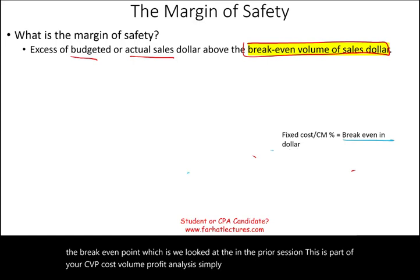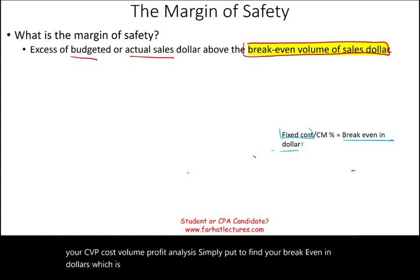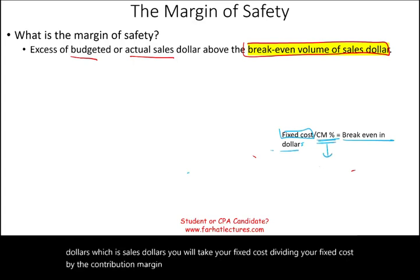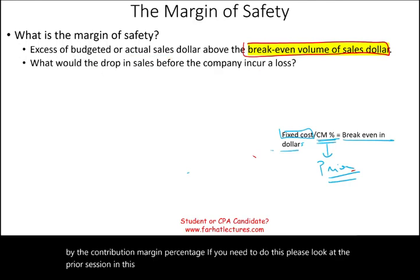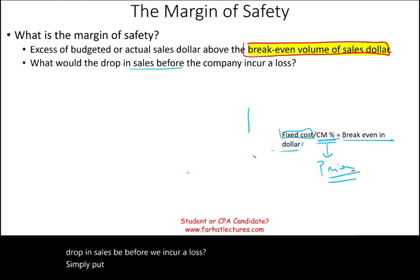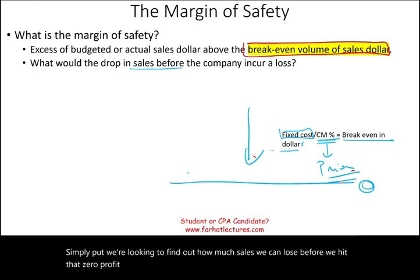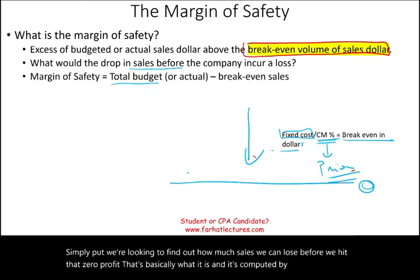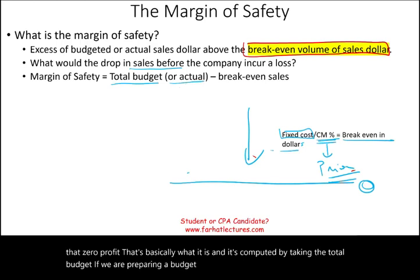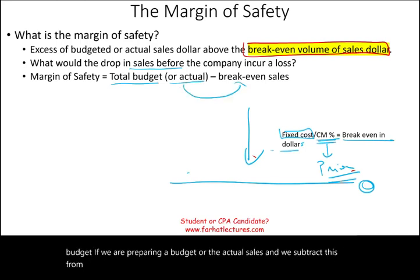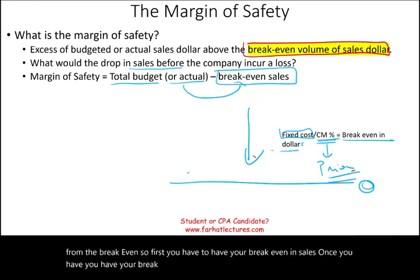Simply put, to find your break-even in dollars — which is sales dollars — you will take your fixed cost and divide it by the contribution margin percentage. If you need to do this, please look at the prior session in this lesson. Simply put, what would the drop in sales be before we incur a loss? We're looking to find out how much sales we can lose before we hit zero profit. It's computed by taking the total budgeted or actual sales and subtracting the break-even from it.